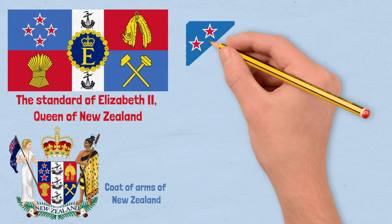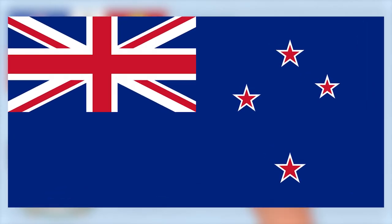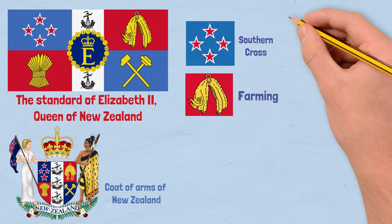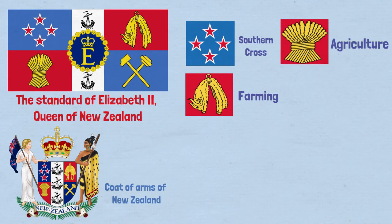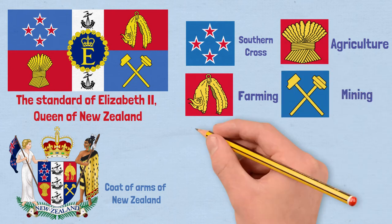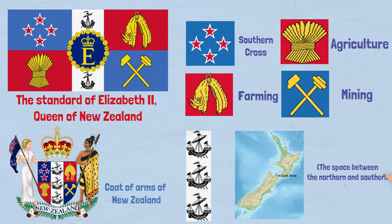Next up is the personal flag of Elizabeth II as Queen of New Zealand. The stars symbolize the Southern Cross, styled in the way of the flag of New Zealand. The fleece is there for the farming industry, the wheat for the agricultural industry, and the two hammers for the mining industry. The white stripe is there for the cook's trade. There are supposed to be three ships in there, although the symbol of the Queen covers one of them — they represent sea trade.